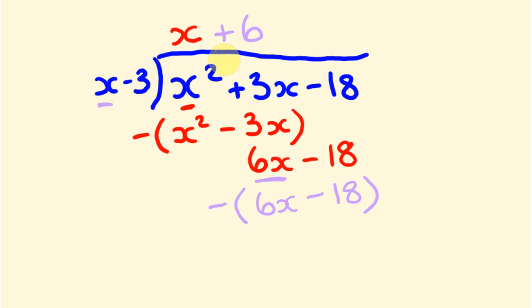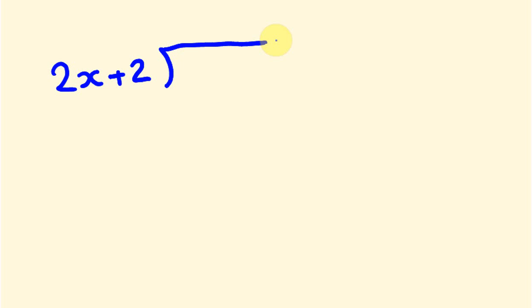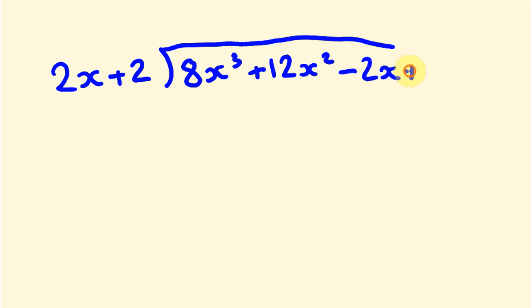Hopefully that makes sense. Now I'm going to go through one more example of long division — a harder one. We're going to divide 2x plus 2 into 8x cubed plus 12x squared minus 2x plus 1. Our powers are all already in descending order, so we can start straight away.